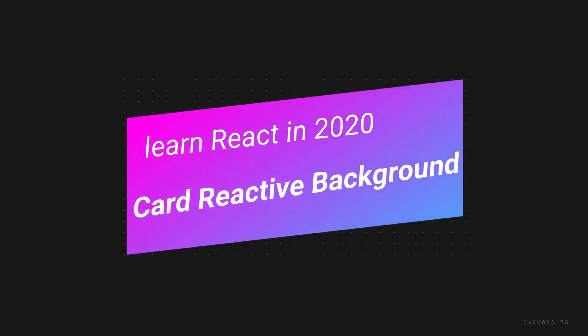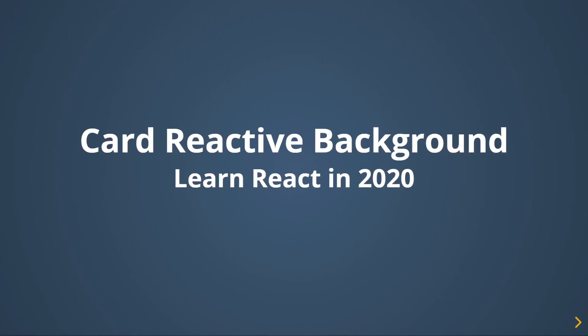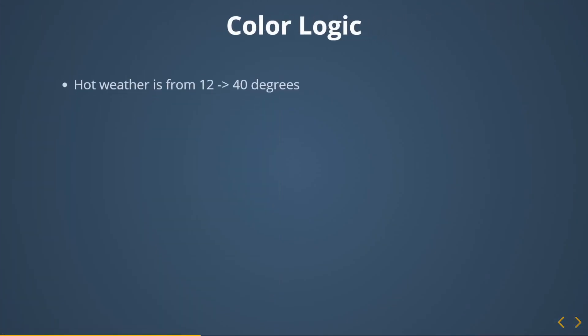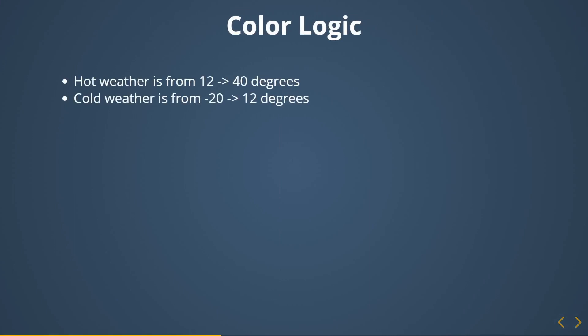Welcome back to the Learn React in 2020 series. This is the second half of coding the chord reactive background. In the first half we discussed the logic behind separating temperatures into hot and cold, and how we are going to express the difference using linear gradients. Hot weather is from 12 to 40 degrees, cold weather from negative 20 to 12. Hot weather will be hues of red and cold weather will be hues of blue.